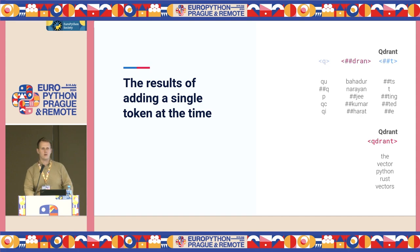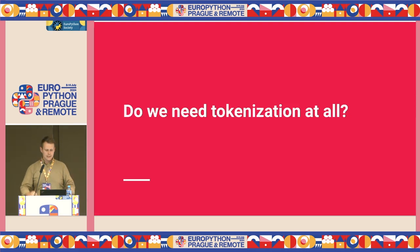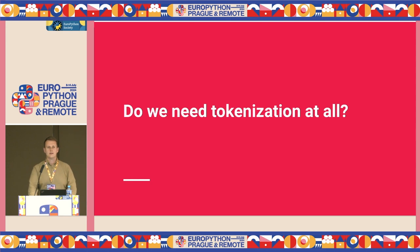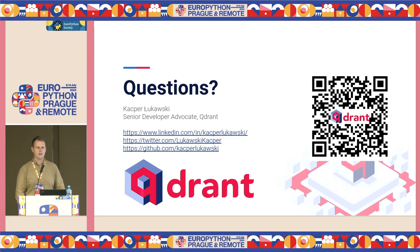There is still an ongoing discussion about whether we really need tokenization at all — there are some architectures that hopefully will get rid of it completely. But until that happens, we still need to have a closer look at how our texts are really represented by the models we use. If you have any questions, I'll be hanging around the conference. This QR code points to my LinkedIn. Thank you very much.